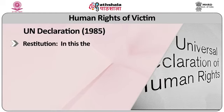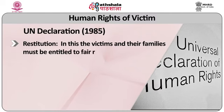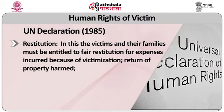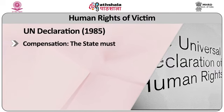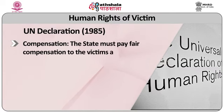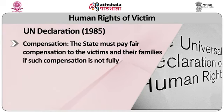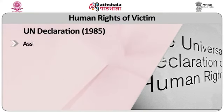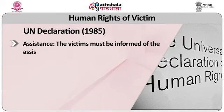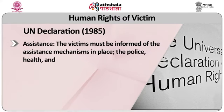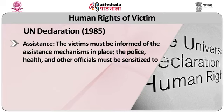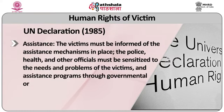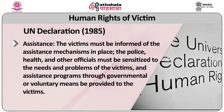Restitution is an important part, in which the victim and their families must be entitled to fair restitution for expenses incurred because of victimization, including return of property and harm made. Then compensation: the state must pay fair compensation to victims and their families if such compensation is not fully available from the offender for significant bodily injury or mental agony. Assistance is also required: the victim must be informed of assistance mechanisms in place, and the police, health, and other officials must be sensitized to the needs and problems of the victims. Assistance programs through governmental or voluntary means must be provided.